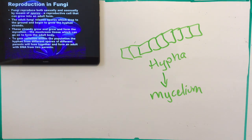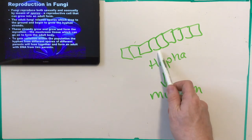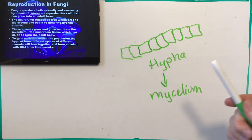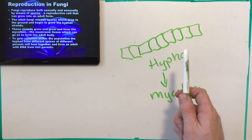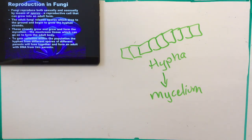Just like in genetics, the asexual way of doing things doesn't give you any increased genetic variation — things stay the same. Whatever the parent fungus was, the offspring will be exactly like that. The sexual reproductive way does give you different options genetically, so the offspring will be different genetically than the parents. There's a reason why fungi would go with one over the other, and we'll get to that in just a moment.